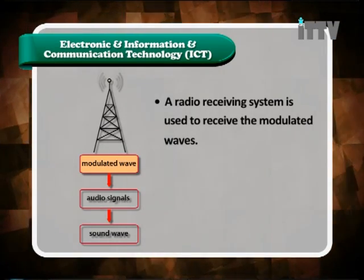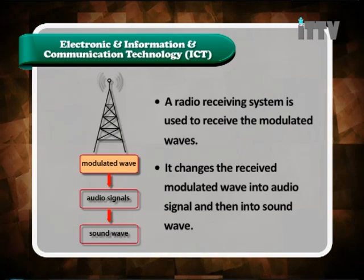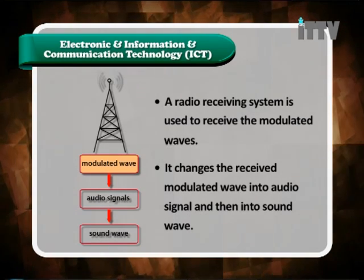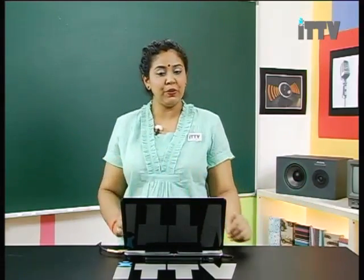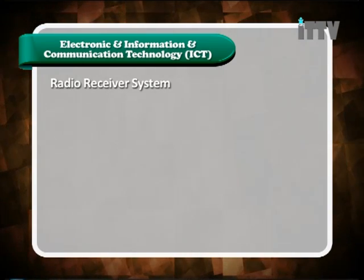Now let's move on to the receiver system. A radio receiving system is used to receive the modulated waves. These modulated waves are then converted to audio signals and finally to sound waves — that is the function of the radio we have in our house. The signal we receive must ultimately be converted into a sound wave that we can hear through the loudspeaker. Five electronic components are needed to help change the modulated signal into sound waves.